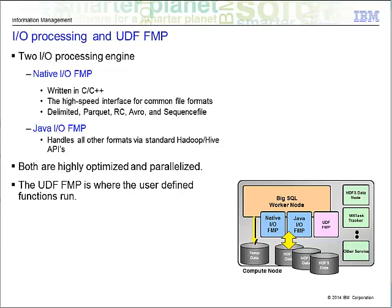Both of these engines are optimized and parallelized, with multiple threads doing the I/O. Also in this diagram, note the UDF FMP — the pink box. The user-defined functions also run in a separate process in order to isolate the database engine from the user code, to prevent the user from doing any harm, just as with the DDL processing engine in the previous slide.